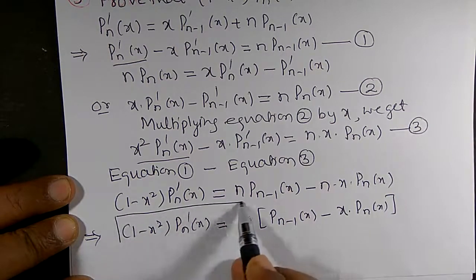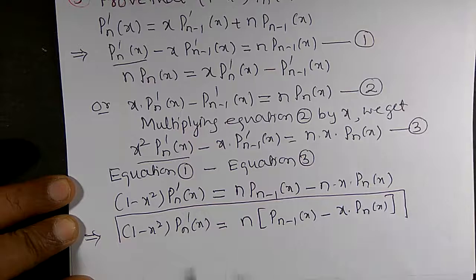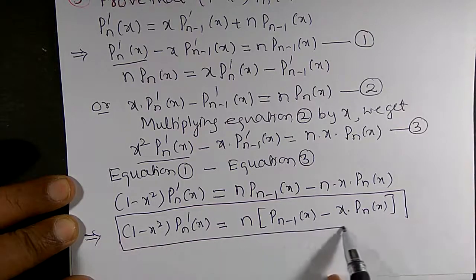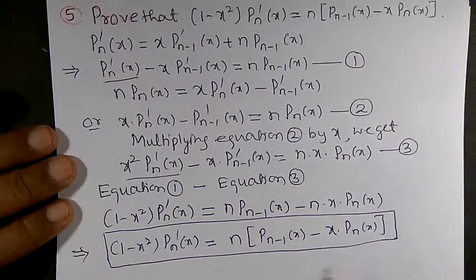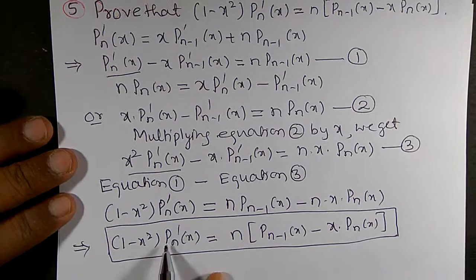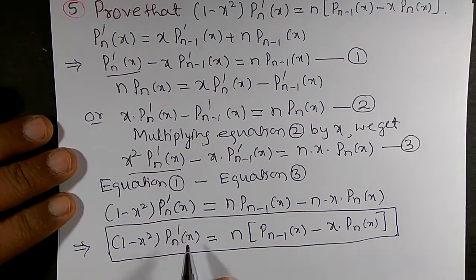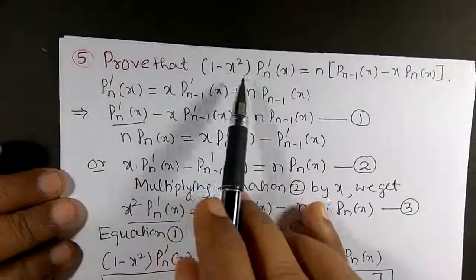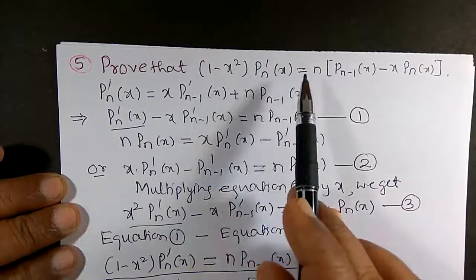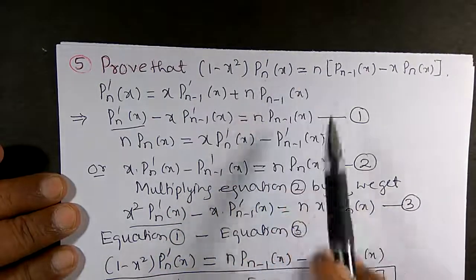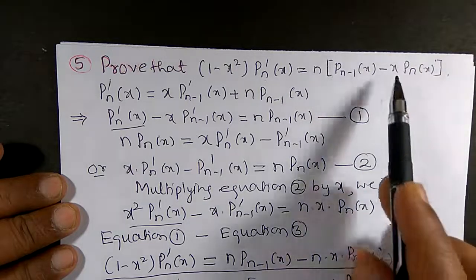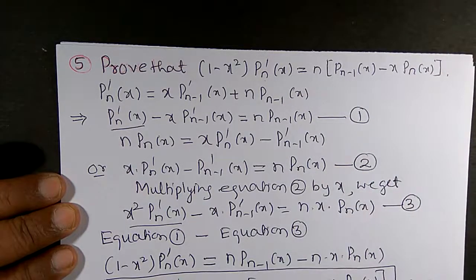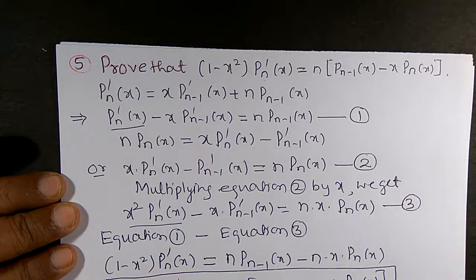So this is the required equation. You can verify: (1 - x²) · P'ₙ(x) = n · Pₙ₋₁(x) - x · Pₙ(x). This is the required recurrence relation. Thank you.